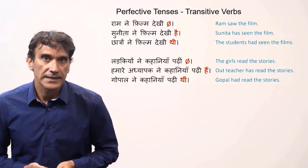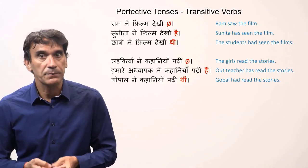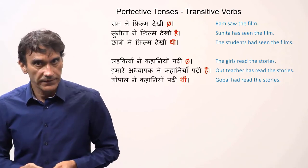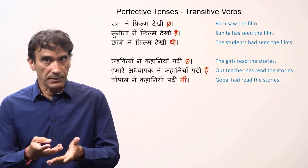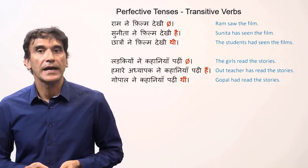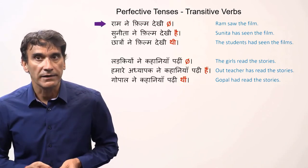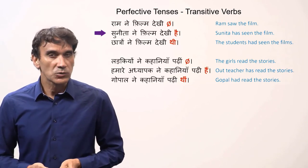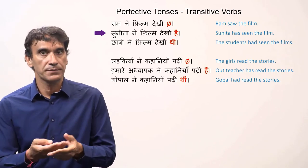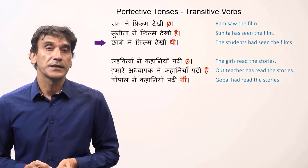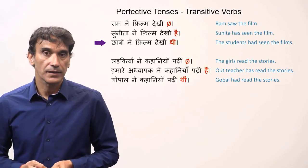Just as with intransitive verbs, the helping verb shows the precise perfective tense: simple perfective, present perfective, or past perfective — corresponding to simple past, present perfect, and past perfect in English. For example: Ram ne film dekhi — Ram saw the film (simple past). Sunita ne film dekhi hai — Sunita has seen the film (present perfect). Chhatru ne film dekhi thi — the students had seen the film (past perfect).